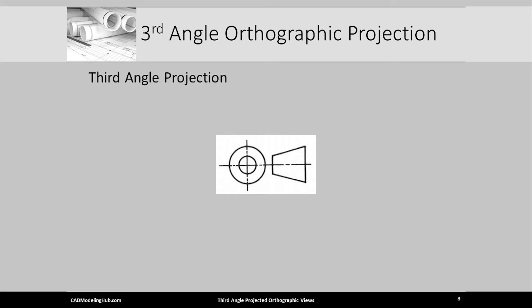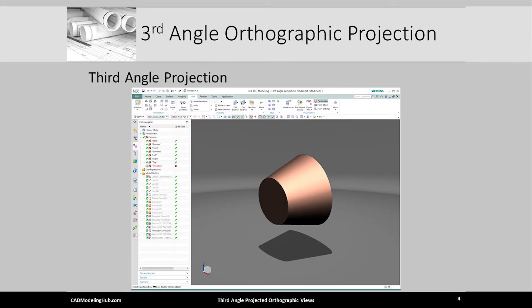This is the symbol placed on engineering drawings to denote the orthographic views were created using third-angle projection. To help you understand this symbol, I have created a truncated cone in the Siemens NX CAD system.